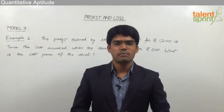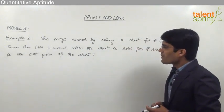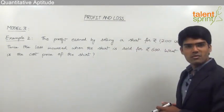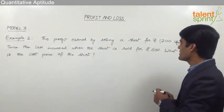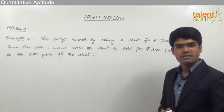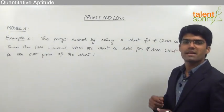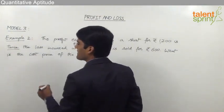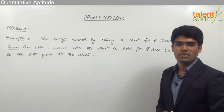Let us now take one more example based on Model 3. The profit earned by selling a shirt for Rs.1200 is twice the loss incurred when the shirt is sold for Rs.600. What is the cost price of the shirt? This example is quite similar to Example 1, but the only difference is the profit is twice the loss, whereas in the previous example the profit was equal to the loss.